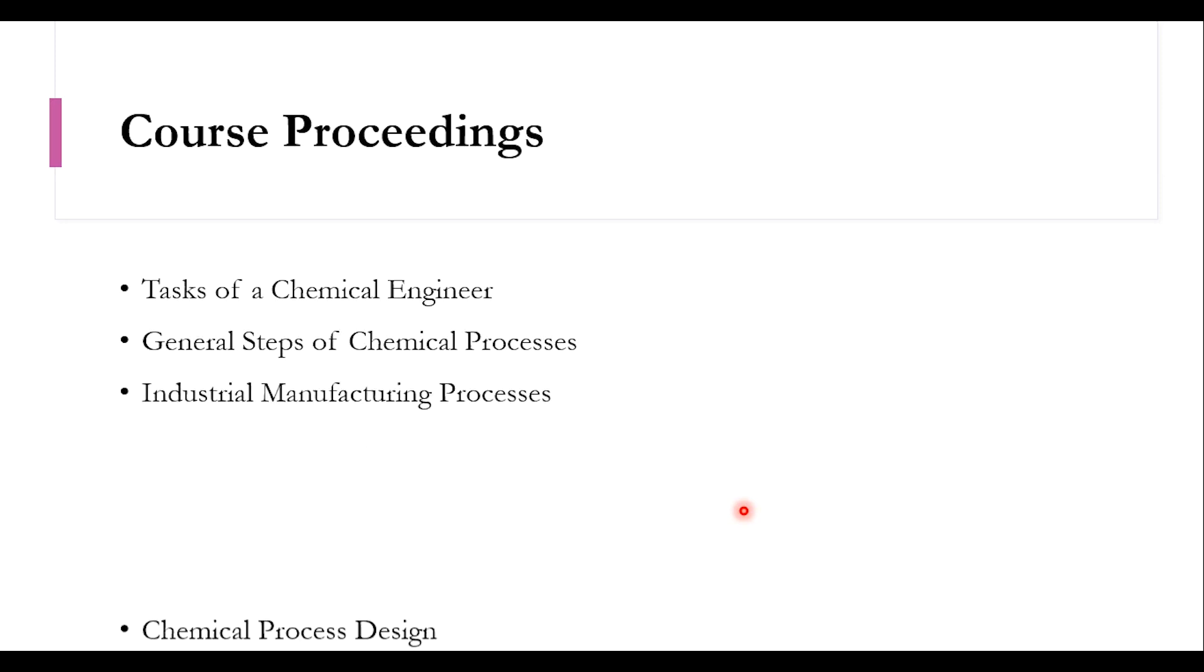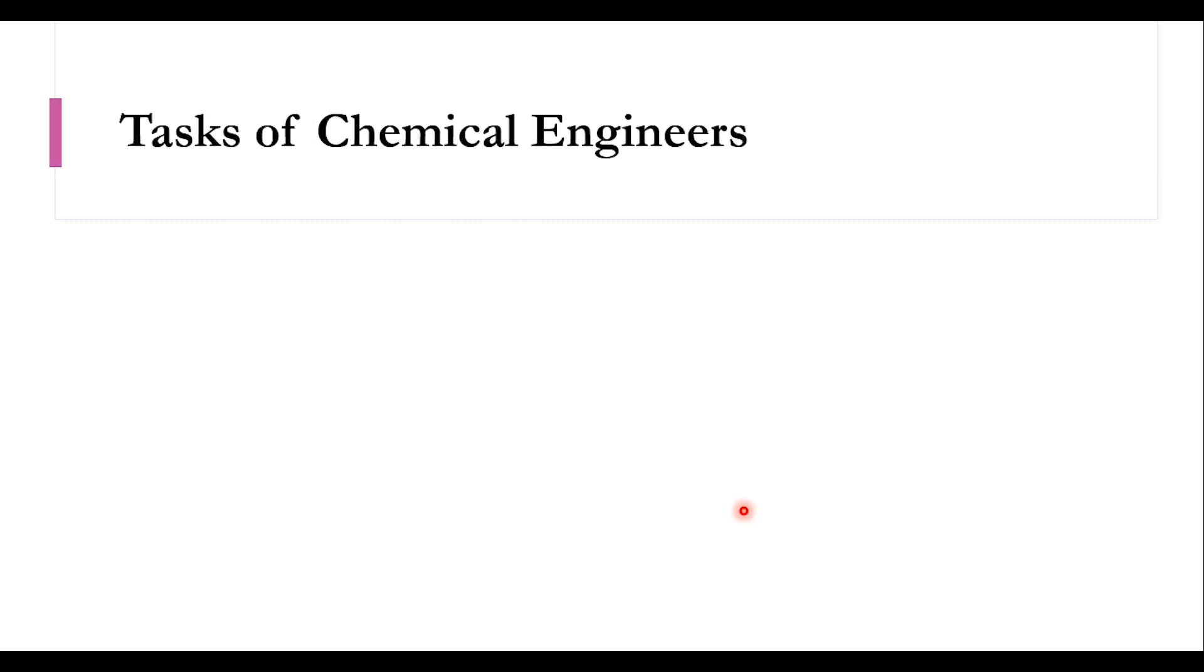What are today's course proceedings? Number one is to first understand what are the tasks of a chemical engineer, then the general steps which are included in chemical processes, industrial manufacturing process, chemical process design with its requirements, example of a process.